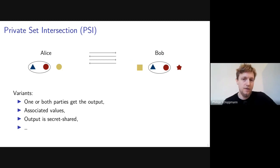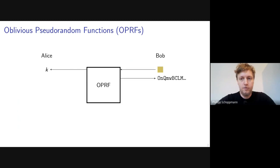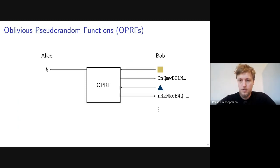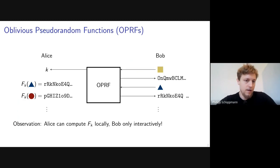In the last couple of years, the most common approach to build private set intersection protocols was based on oblivious pseudorandom functions. An OPRF is the distributed equivalent of a PRF in the centralized setting. Alice has the key to the PRF and gets it as a result of the OPRF protocol, while Bob only learns the OPRF output on certain input values he chooses at the beginning. Alice can compute the PRF value on any input locally, whereas Bob can only evaluate it interactively on a fixed number of inputs.